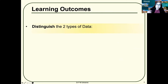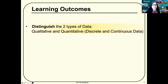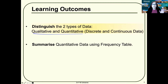Now you know how to distinguish between qualitative and quantitative data, and between discrete and continuous data. Now, how do we summarize quantitative data? We use something called a frequency table to summarize quantitative data.